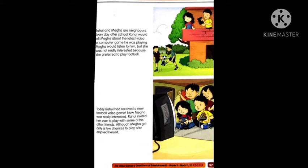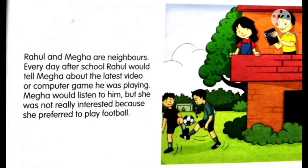Now let us move to page number 57 and read the lesson. Here are some characters — Rahul and Megha are neighbors. Every day after school, Rahul would tell Megha about the latest video or computer game he was playing. Megha would listen to him. But she was not really interested because she preferred to play football. So by this we can guess that Rahul likes video games, but Megha does not.